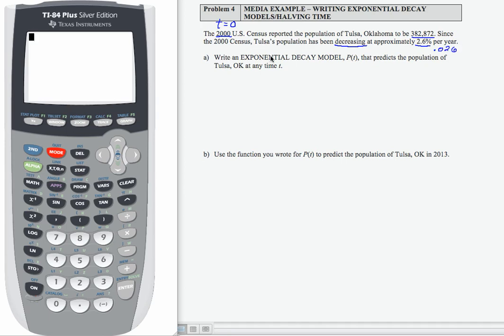Let's write an exponential decay model, P(t), that predicts the population of Tulsa, Oklahoma at any time t. We're going to use our generic exponential function model, and the pieces that we plug in will ensure that it is a decay model. Our a value is our starting population, which is 382,872.